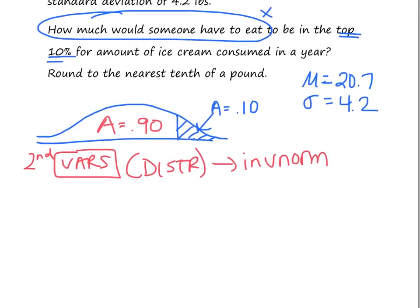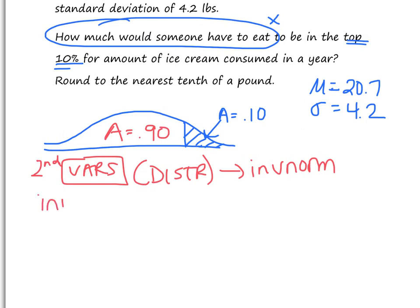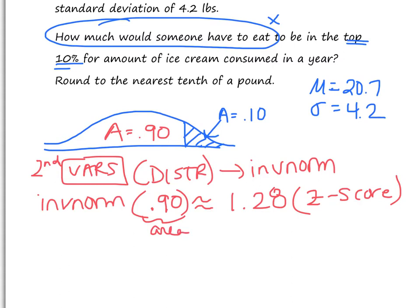It's going to bring me to my home screen with the inverse norm there. I'm always going to put in the left area, and that's why that 0.90 was important to me. The inverse norm always wants the left area. So if I put in 0.10, it's thinking I'm talking about the lowest 10% of the graph. If you press enter, what you're going to end up getting is this number, 1.28, and this is a z-score. Normal CDF, you put in z-scores, it gives you area. Inverse norm does the exact inverse. I put in area, and it gives me out a z-score.